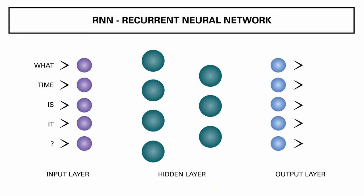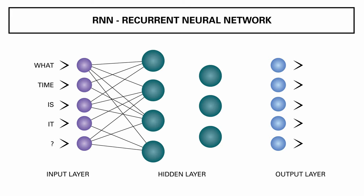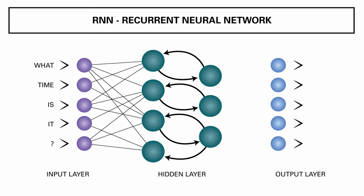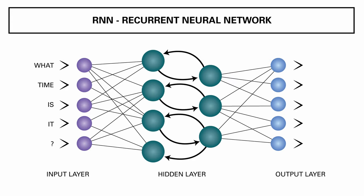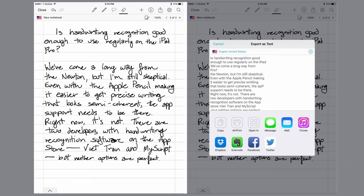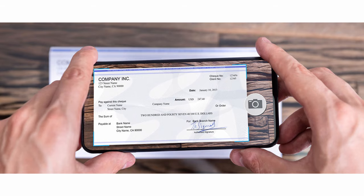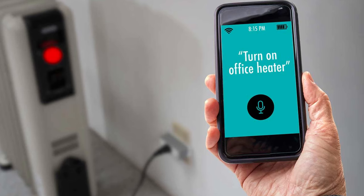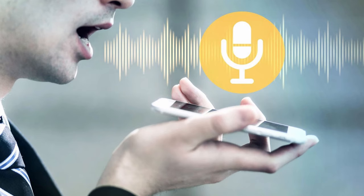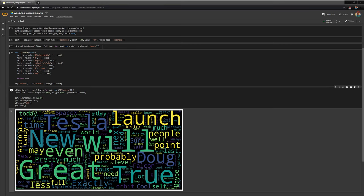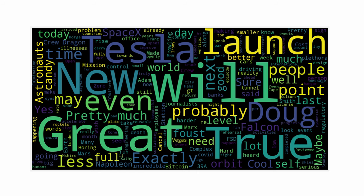Self-driving vehicles also use CNN algorithms to automatically detect objects such as stop signs and traffic lights, and to detect pedestrians, which helps decrease accidents. CNN algorithms are also used to add color to black and white images and video. The third type is RNN, or recurrent neural network. It is used to analyze text, audio and time series — it is more advanced than MLP since the algorithm loops through the data to capture all sequential information. It is used for handwriting recognition when you sign checks and deposit them digitally, and for automated hearing and speech translation, speech recognition, and sentiment analysis in the stock market.